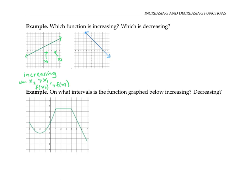The second line is an example of a decreasing function, because as the x values increase from left to right, the y values are going down.